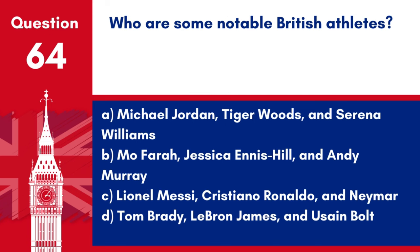Question 64. Who are some notable British athletes? A. Michael Jordan, Tiger Woods and Serena Williams. B. Mo Farah, Jessica Ennis-Hill and Andy Murray.